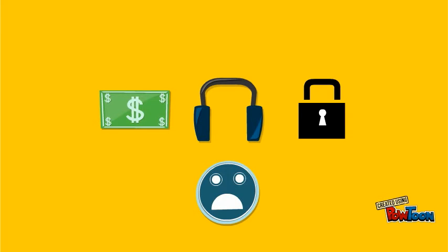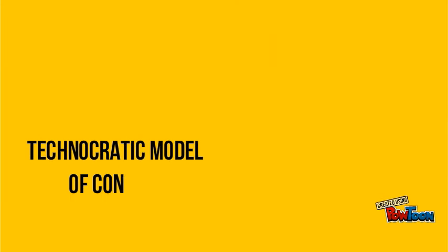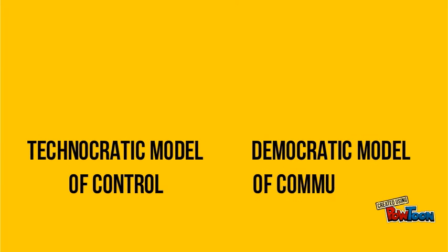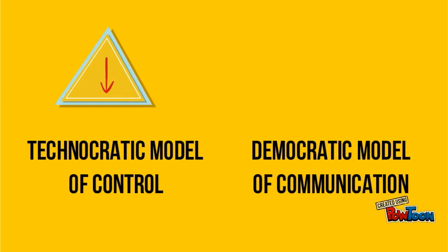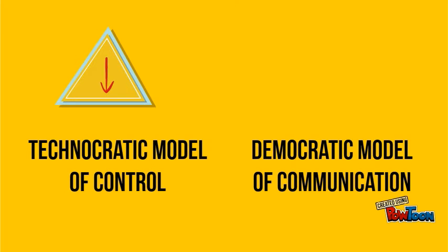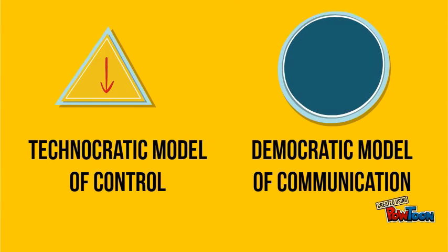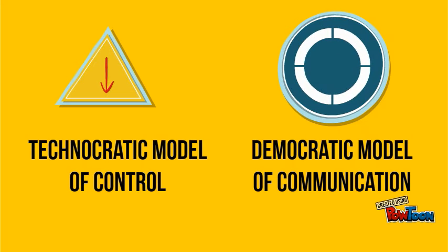Feinberg also proposes two models of technology design: a technocratic model of control, and a democratic model of communication. In the technocratic model, technology is designed in isolation from the community, privileging values like authority and expertise. This model concretizes power in order to conserve and continue existing hierarchical power relations. The democratic model privileges democracy and plurality, and promotes technology design and use in a way that decentralizes hierarchies through social and environmental reforms.